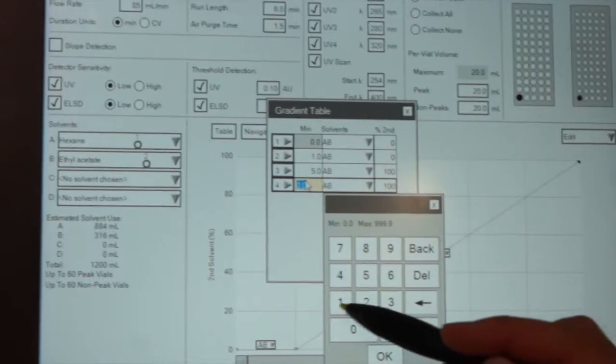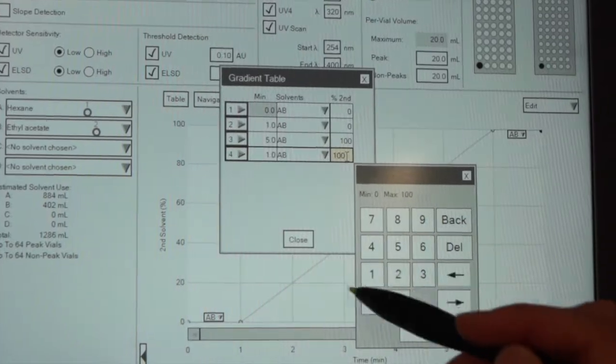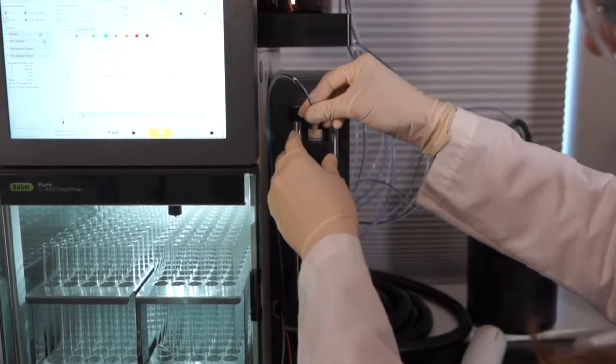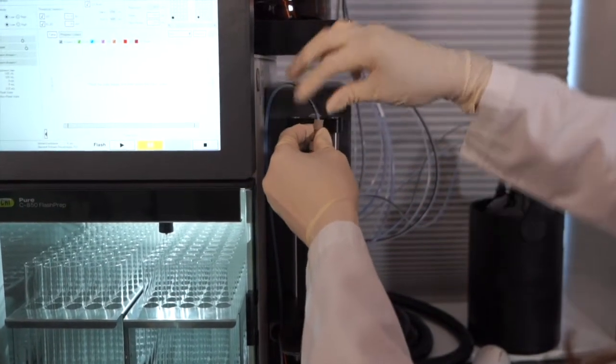As you can see, the Pure instrument is easy to operate and so is the software. All the important variables are visible on the main screen. There are two main ways to get gradients, either by inputting the steps in a gradient table or by dragging various points to change the flow of different solvents. For complex separation, you can even change solvent part-way through a run.